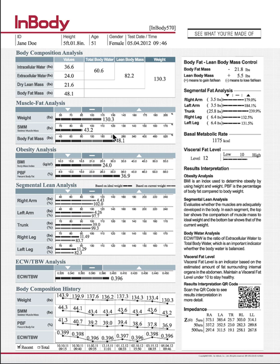We use the technology called bioimpedance, where it sends three different frequencies into your body and it measures water weight, muscle mass, and body fat. This is one of the most accurate ways to measure body composition using bioimpedance technology.